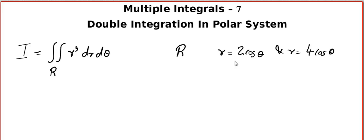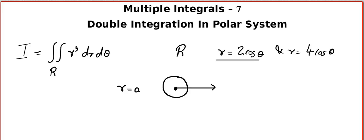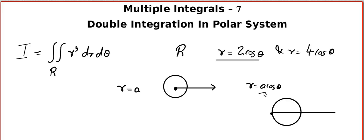As mentioned in the last video, I gave you two reference videos about polar curves from the first semester. This is a standard equation. r = a is a circle with center at the pole and radius a. r = a cosθ is a circle with diameter along the initial line, where the diameter equals a. And r = a sinθ is also a circle with diameter a.